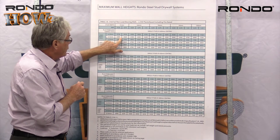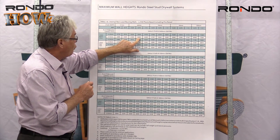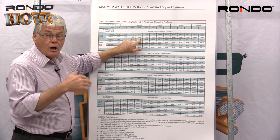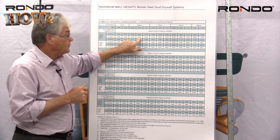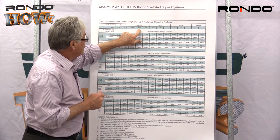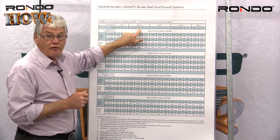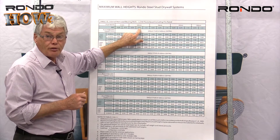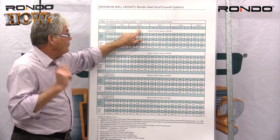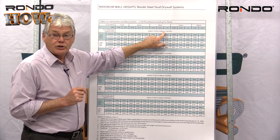When we move horizontally across we come to 4.22, which is the maximum height of this particular wall. When we turn around and go up we come to 64mm stud with 0.75 base metal thickness. That would be a selection. The studs are spaced at 600mm centres.